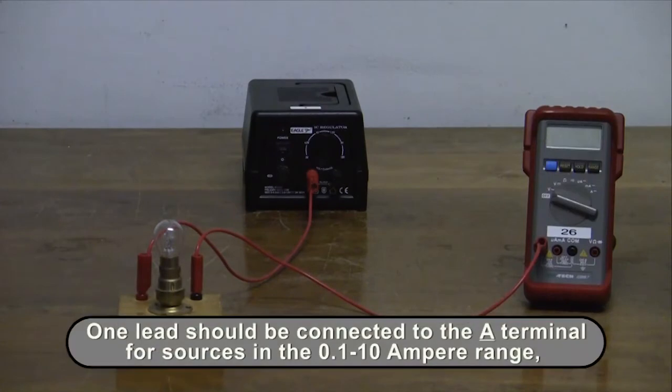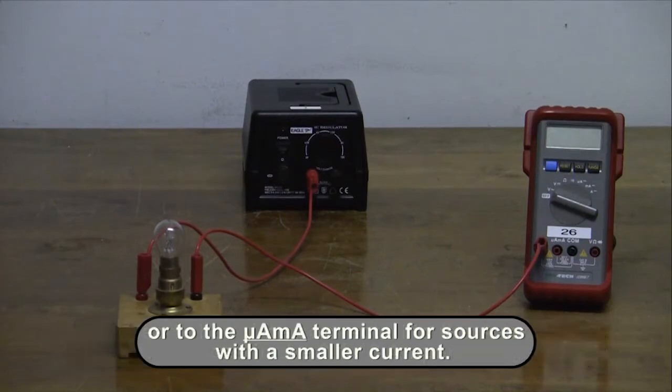Different terminals must be used for different current ranges. If the current is in the 0.1 to 10 ampere range, a lead should be connected to the terminal labelled A. If the current is smaller than 100 milliamps, the microamp or milliamp terminal should be used.